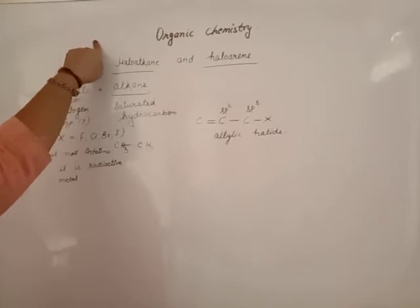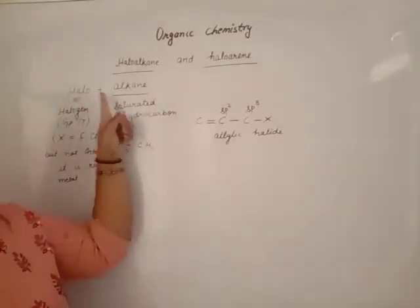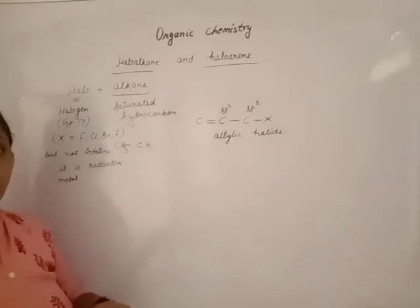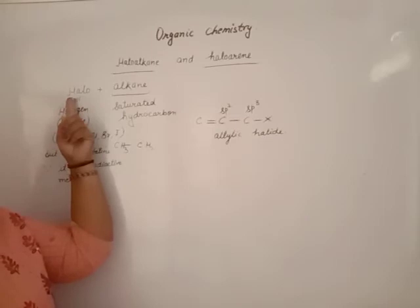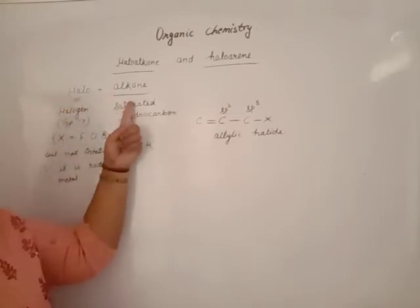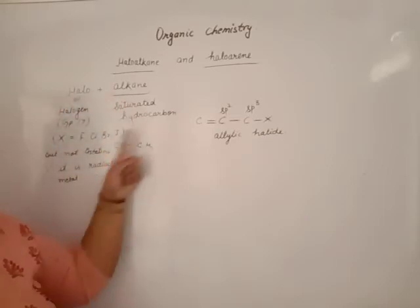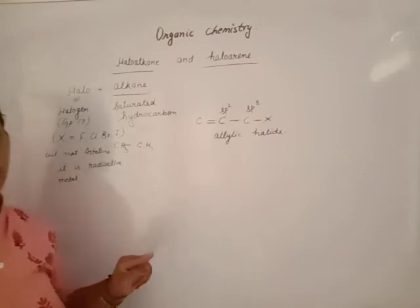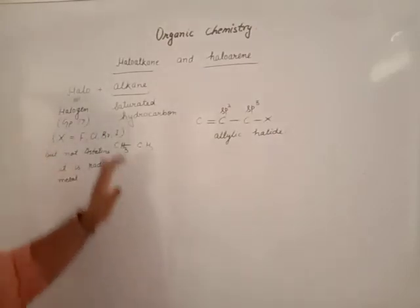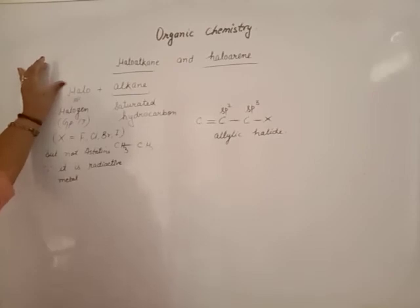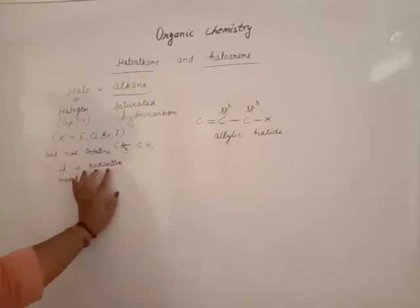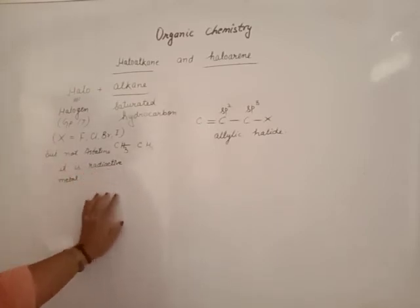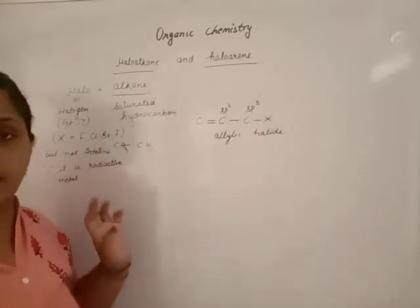To summarize: haloalkane is the combination of halogen and saturated hydrocarbon. From the saturated hydrocarbon, one H is replaced by a halogen — fluorine, chlorine, bromine, or iodine. Not astatine, because it is radioactive in nature and its properties are not common with the other halogens.